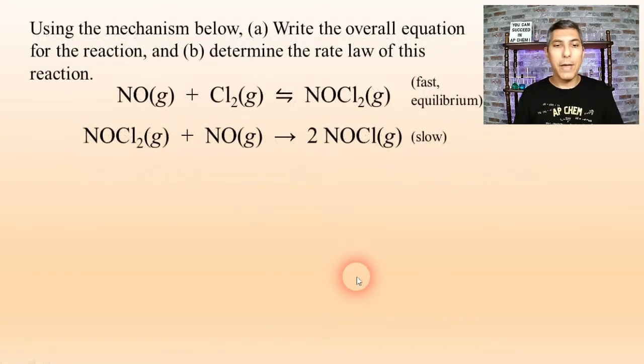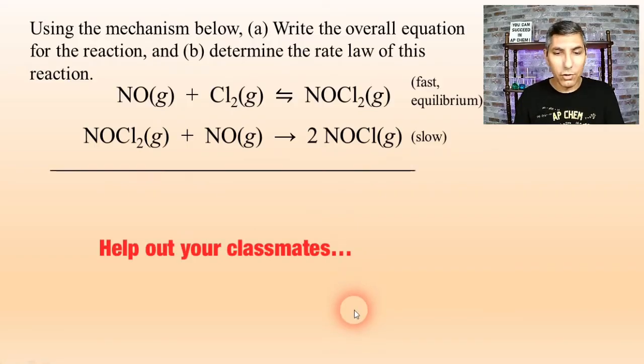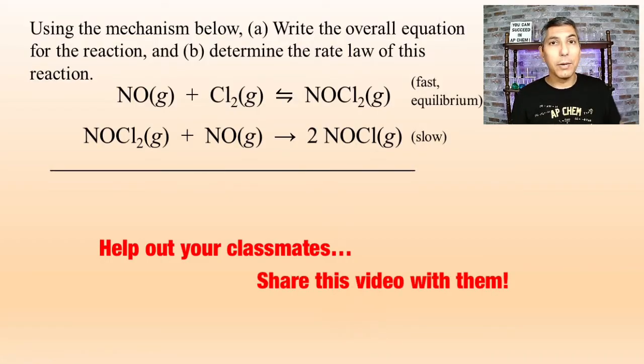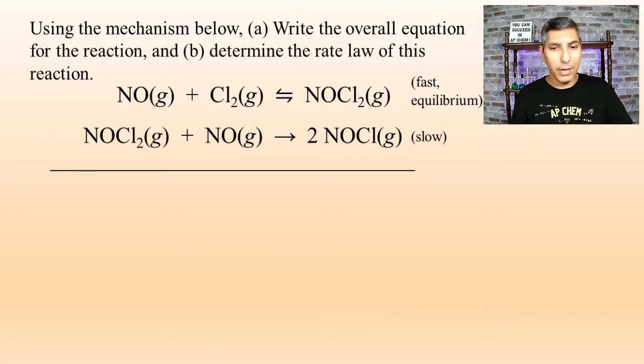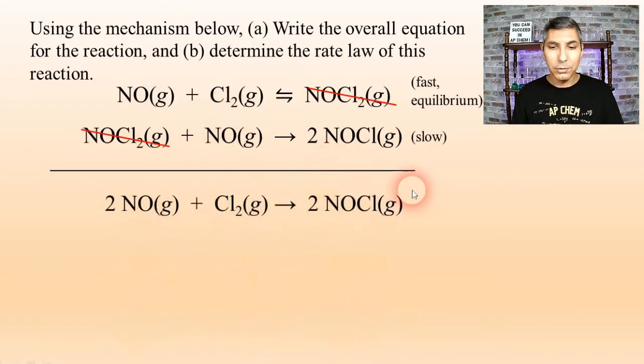Now, let's try another mechanism here. We're going to take a look at this mechanism, and once again, we're going to write the overall balanced equation for the reaction. You might notice, just like we did last time, that we have a substance that we can cancel out on both sides of the arrow. This NOCl2, it's the reaction intermediate. It's produced in the first step, and then it's used up in the second step. So that's going to be canceled out. We're not going to include the reaction intermediate in the overall balanced equation. But now, we can add everything together. We have two molecules of nitrogen monoxide plus Cl2 yields two NOCl gas. And so that's our overall balanced equation.